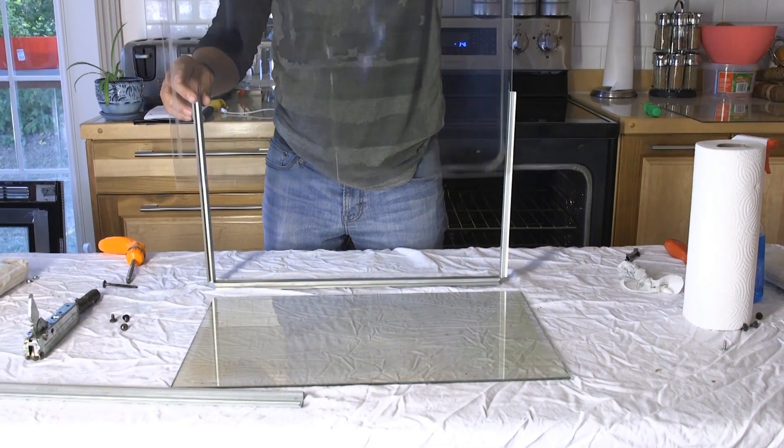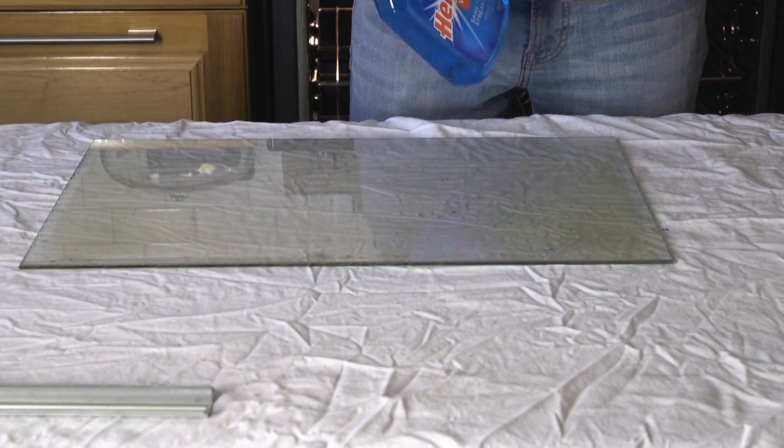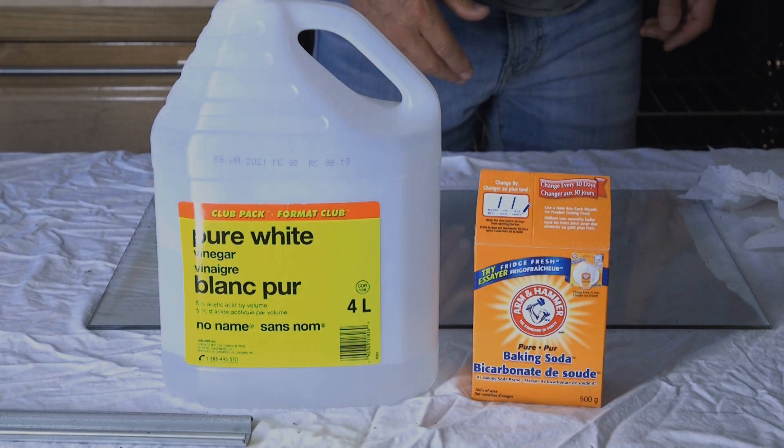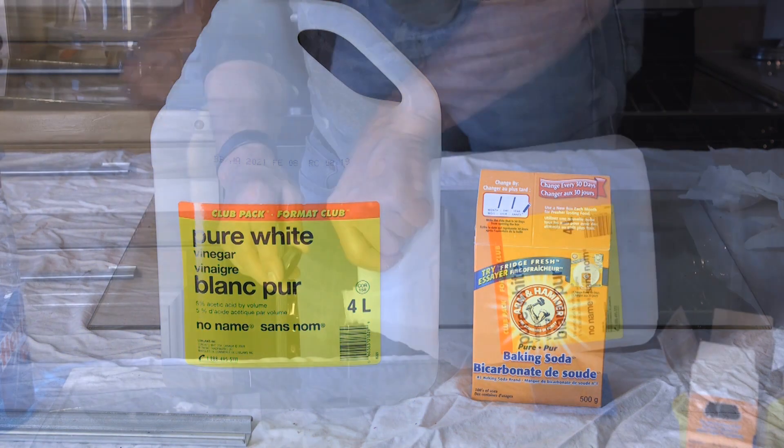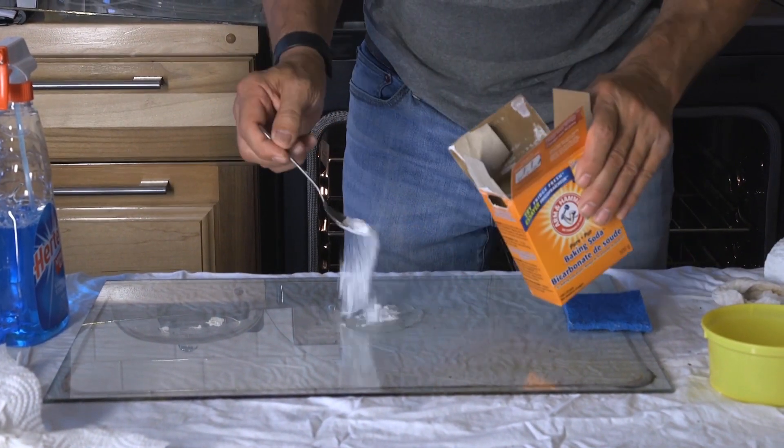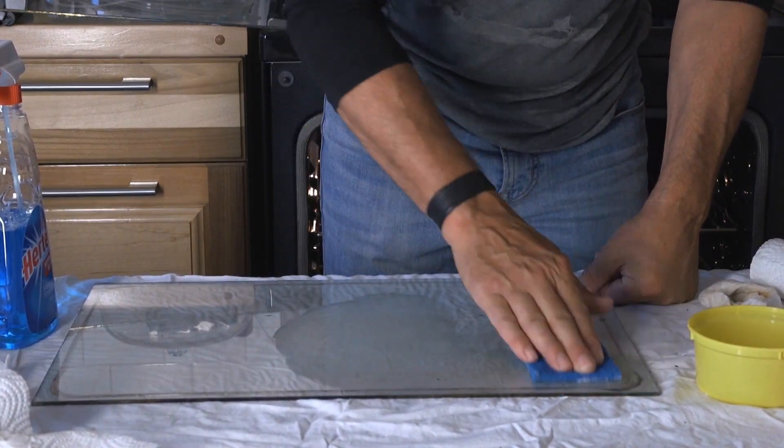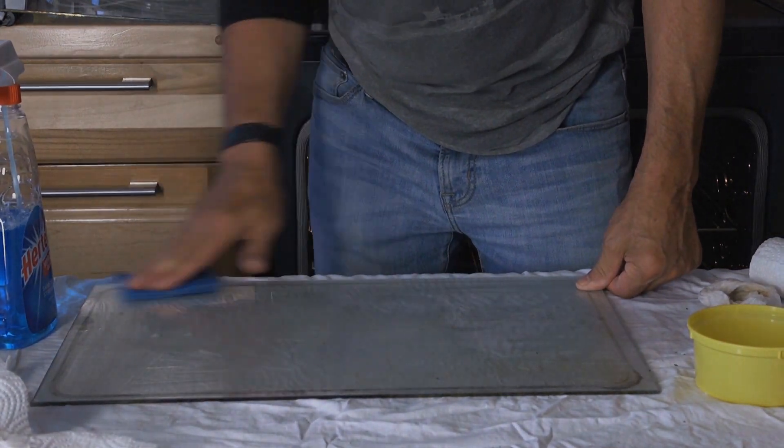Clean those 2 windows the same way as you cleaned the 2 first ones. And for tough stains, you could use white vinegar and baking powder. You might need to let it sit for a while.